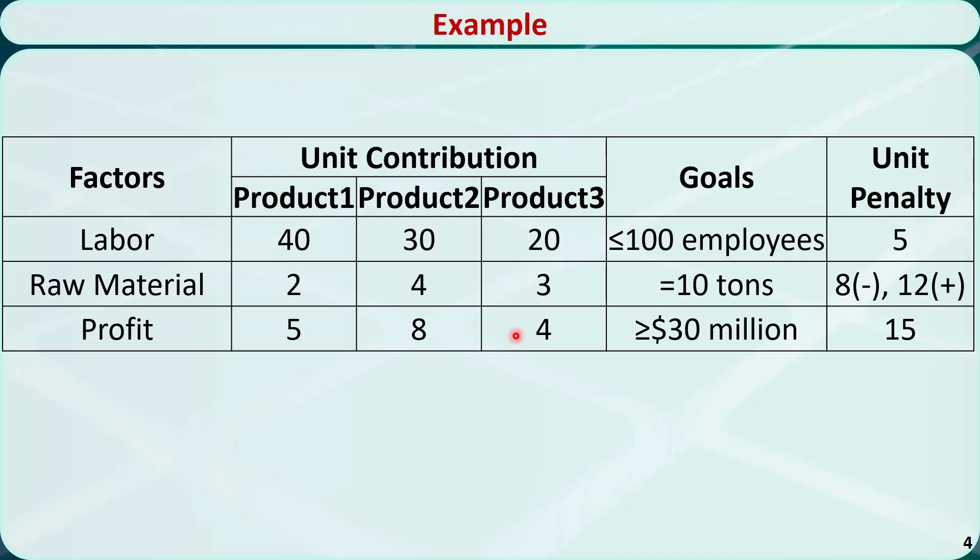The manager wants to meet these three goals. First, the maximum number of employees that can be allocated to producing these products is 100. Second, there are 10 tons of raw material in the warehouse. The manager wants to consume them all, no more and no less. Third, the total profit is expected to be at least $30 million.